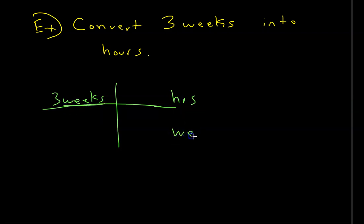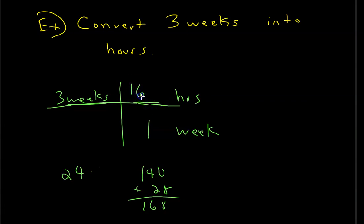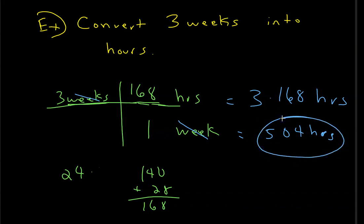Start with 3 weeks. Weeks is the unit we're in, and we want to convert to hours. Think: there are 24 hours in a day and 7 days in a week, so 7 times 24 equals 168 hours in one week. Multiplying across, the weeks cancel, giving 3 times 168 equals 504 hours in 3 weeks.